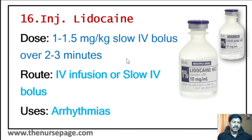Twenty-third injection is IV dextran — not dextrose, but dextran solution. Dose is 20 milliliter per kilogram body weight. Route is IV infusion. Used as a temporary blood replacement when blood transfusion is taking too long. Main indication is hypovolemia due to severe blood loss.